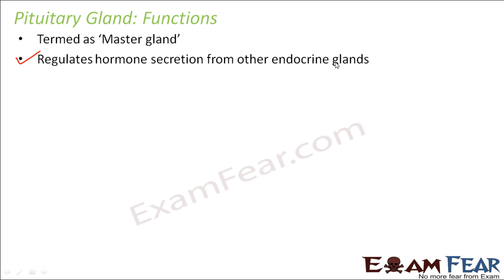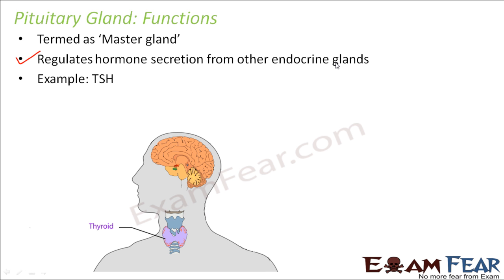The pituitary gland instructs other glands when to secrete their hormones. For example, the adrenal gland secretes specific hormones like the corticoids and adrenaline; the thyroid gland releases thyroxine; and the testes release testosterone. When each gland has to release its hormones is controlled by the pituitary gland, which sends this signal by secreting its own hormones that regulate hormone secretion from other glands.